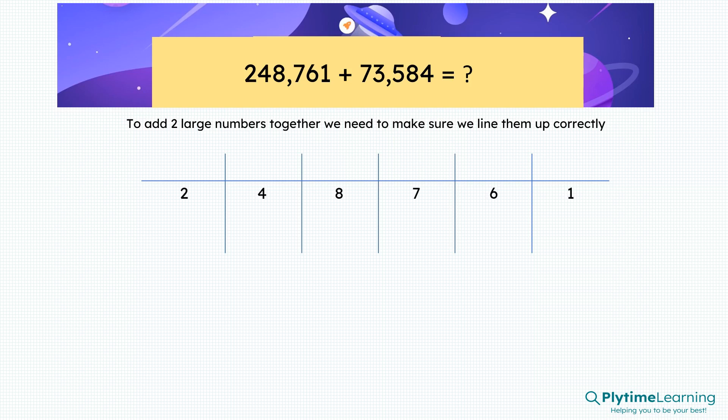We add our first number. And then we line up the numbers starting in the ones column on the right-hand side. So the four goes beneath the one.